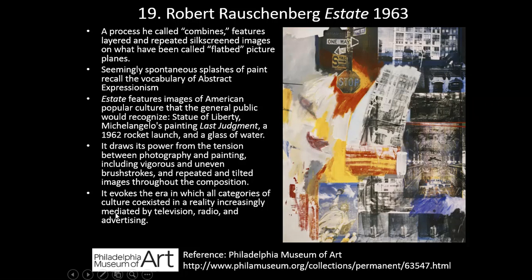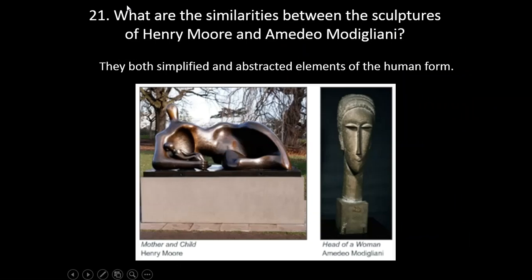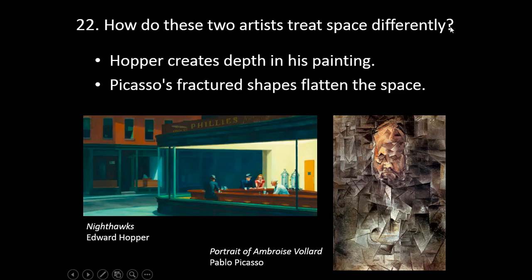Question twenty-one asks about the similarities between the sculptures of Henry Moore and Amedeo Modigliani. Question twenty-two asks how Hopper and Picasso treat space differently. Well, Hopper is still using perspective to create depth in his painting, whereas Picasso the Cubist threw perspective out the window — the fractured shapes flattened the space. Submit your test. Did you get an A? If not, restart the test, slow down, and do your best. Have a great week!